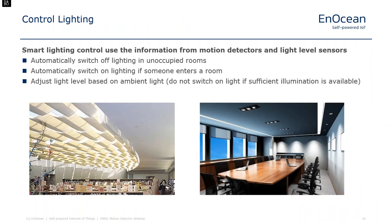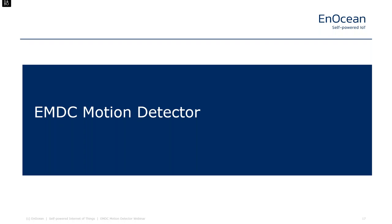After HVAC, the second most important area of energy optimization is lighting. Beyond the trend towards LED lighting, you can automatically switch off lighting in unoccupied rooms and switch it on when somebody enters, creating an automatic system that requires no manual interaction. You can also automatically adjust light levels based on incoming ambient light, avoiding situations like an empty meeting room with full illumination on a bright sunny day.